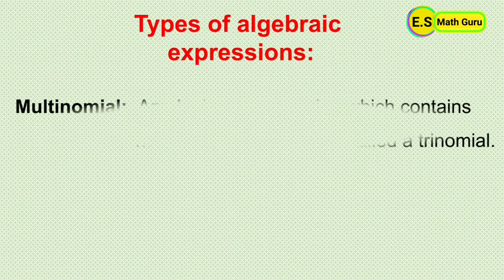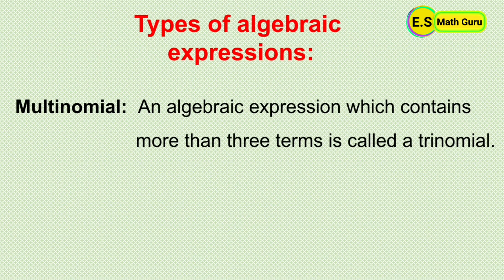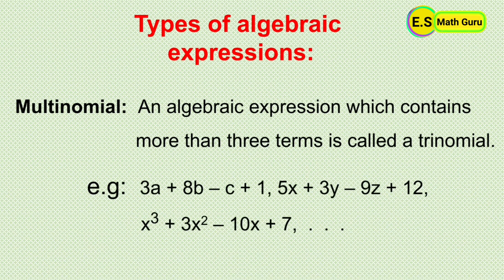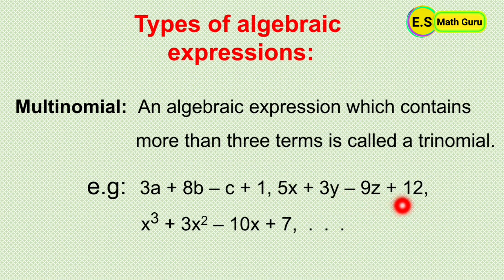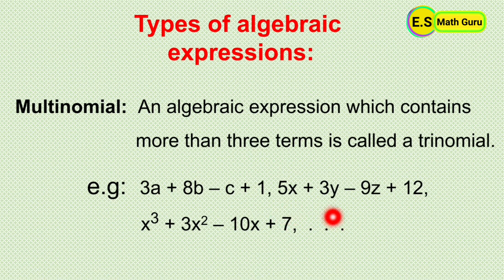Multinomial: an algebraic expression which contains more than three terms is called a multinomial. For example, 3a plus 8b minus c plus 1, 5x plus 3y minus 9z plus 12, x cubed plus 3x squared minus 10x plus 7, and so on.